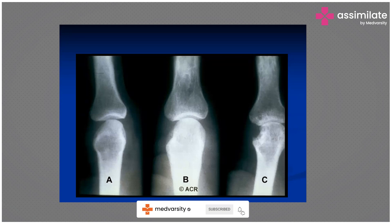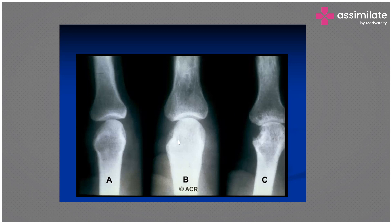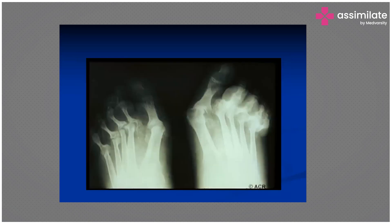Now you can understand the ABC diagrams and diagnose X-ray findings. To summarize: for bone A there is osteopenia; for bone B there is uniform symmetric joint space narrowing — it is not on one side only, it is symmetrical and uniform; for bone C there are marginal subchondral erosions.